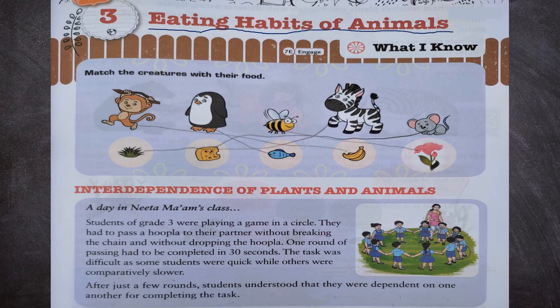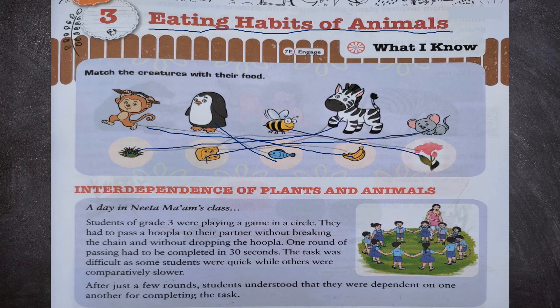First of all we have to match the creatures with their food. We have different food items and different animals. Monkey eats banana, so we match monkey with banana. Penguin eats fish. Honey bee sucks nectar from flowers. Zebra eats grass. And mouse eats cheese. So these are different eating habits of animals.